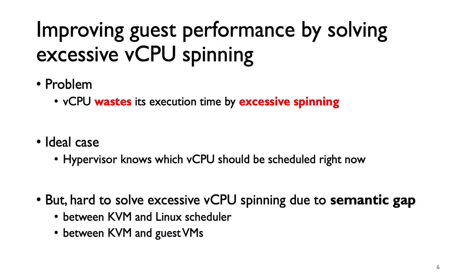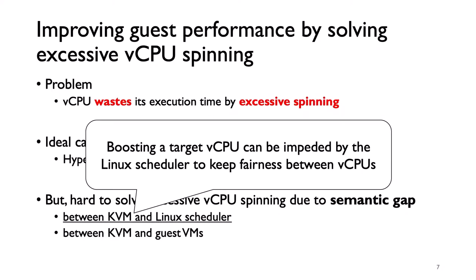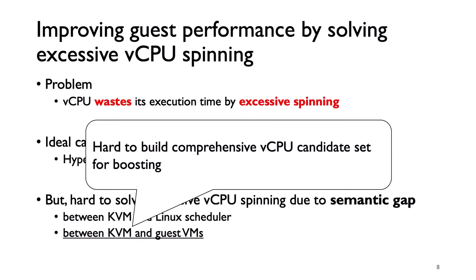Excessive vCPU spinning can degrade the performance of guest VMs. Virtual CPUs waste their execution time by executing pause loop instructions for a long time. Ideally, the hypervisor would know which vCPU should be scheduled to avoid excessive vCPU spinning like lock-holder preemption. However, it is hard due to the semantic gap between KVM and the Linux scheduler, or KVM and guest VMs. Because of this semantic gap, boosting a target vCPU can be impeded by the Linux scheduler to keep fairness between vCPUs. The semantic gap also makes it hard to build a comprehensive vCPU candidate set for boosting.